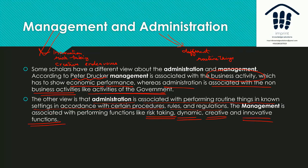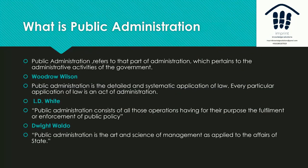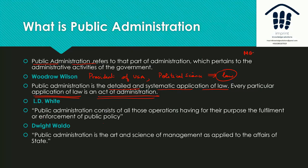Now let's look at public administration. Woodrow Wilson says public administration is the detailed and systematic application of law — every application of law is an act of administration. Wilson, being President of the United States and a political scientist, thought of administration in terms of application of law. In general, public administration refers to that part of administration which pertains to the activities of the government — from police work to implementing MGNREGA or any government scheme.